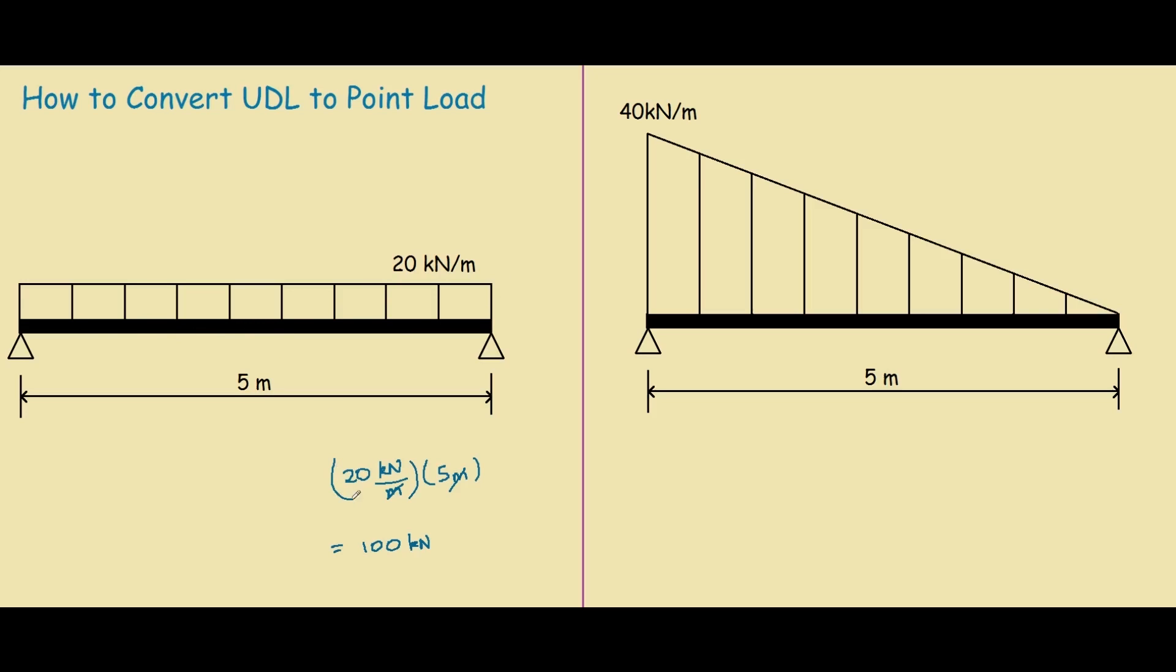However, just knowing the point load is not enough, we need to know where it's located on the beam. For a rectangular UDL, it's simply the halfway point between the rectangle ends. So in this case, it would be 2.5 meters.